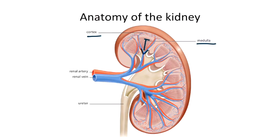The nephron is the functional unit of the kidney, which is a microscopic structure and can't be seen on this image. If you could see the nephron grossly, it would start somewhere up here, dip down into the medulla, and then come back up like this. The renal artery is a direct branch of the aorta, and it provides blood to the kidneys.